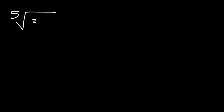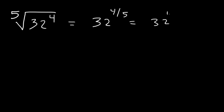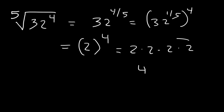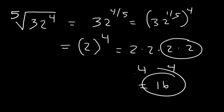Here's another one. What about the 5th root of 32 raised to the 4th power? We can rewrite it as 32 to the 4/5. We need to find the 5th root first, then raise it to the 4th power. The 5th root of 32 is 2. And 2 to the 4th power is 2 times 2 times 2 times 2: 2 times 2 is 4, and 4 times 4 is 16. So 16 is the final answer.